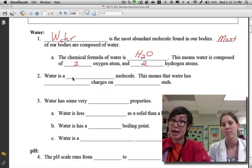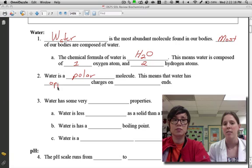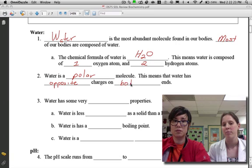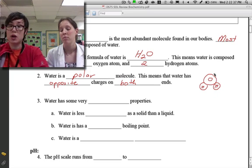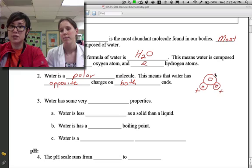Water is a polar molecule. And what does that mean? It means that water has opposite charges on both ends. So if we were to draw a water molecule, it looks like Mickey Mouse. So here are my hydrogens. If it's polar it just means that it's like the earth, it has poles. So we're going to have a positive side with our hydrogens and a negative side. So they're just oppositely charged.